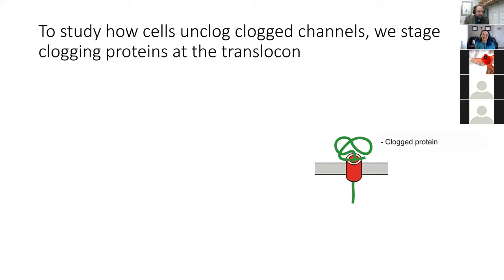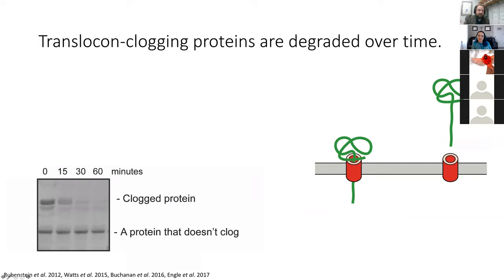We use a technique called a Western blot to visualize and measure the abundance of these proteins. The individual horizontal lines or bands in this image represent proteins, and the intensity of these bands correlates with how much of that protein is present at a given time. Here we're looking at a protein engineered to clog translocons — for reasons I won't get into today, this particular clogging protein appears as multiple lines on this Western blot. Down here is a protein that does not clog translocons, and we're going to use that as a comparison. We track the fate of clogging proteins over time — in this case, over the course of 60 minutes.